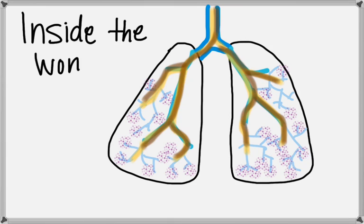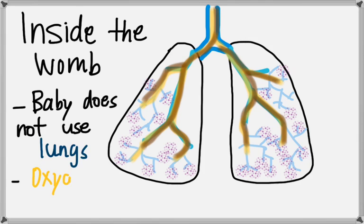Inside the womb, the baby does not use his or her lungs or breathe air because the baby receives oxygen from mom. It is not until a baby is 35 to 36 weeks inside the womb when the lungs are mature.